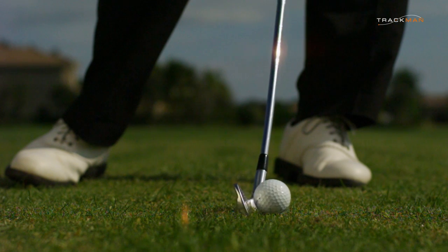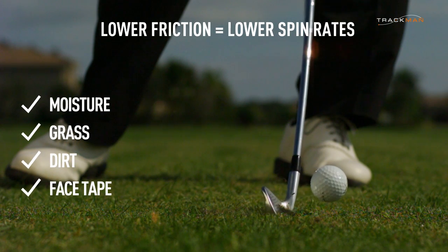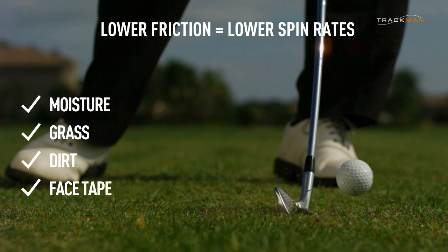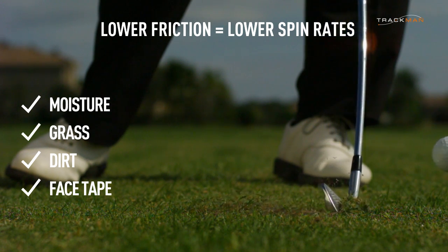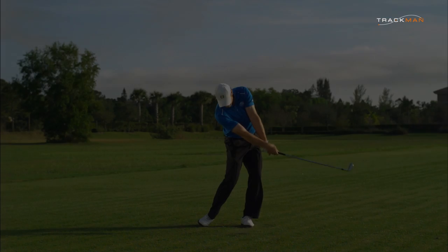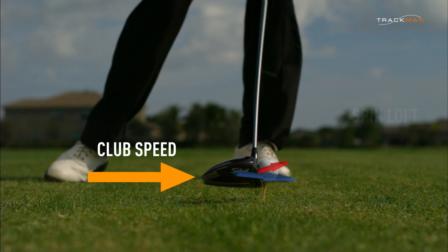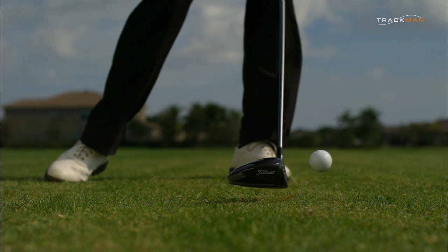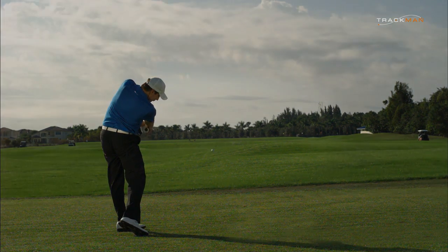Finally, changes in the friction between the club and ball will also affect the spin rate. Moisture, grass, dirt, face tape, and other substances will change the expected spin rate value. Although there are many factors influencing spin, start with the basics — look at the primary factors of club speed and spin loft to understand what is generating the spin rate.